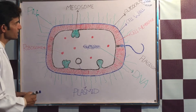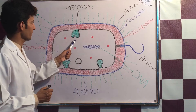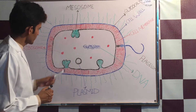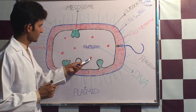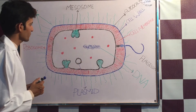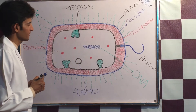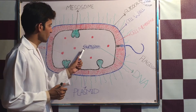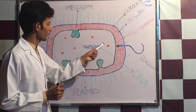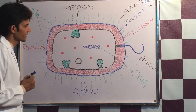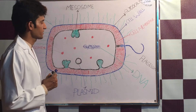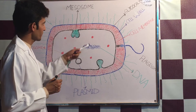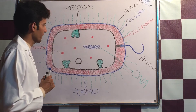The red structures are called ribosomes, which are involved in the synthesis of protein. The genome or genetic material of bacteria contains a single DNA molecule, or a single chromosome, which determines all the properties of the bacterium.